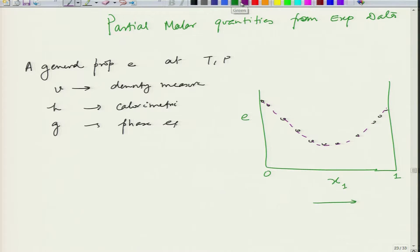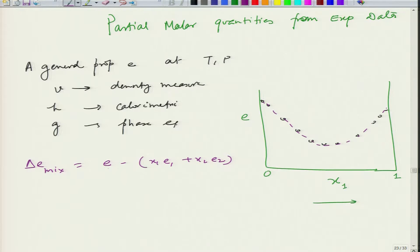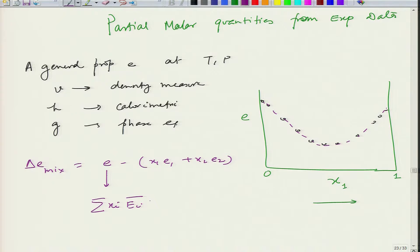Our interest is to find out partial molar properties. Starting from the definition for E of the mixture for a binary: E_mix = x1·E1 + x2·E2. The change in molar property delta E_mix = E_mixture minus that of the pure components, and E = summation x_i·E_i_bar, which are the partial molar properties. We are interested in finding E1_bar and E2_bar for the binary mixture.